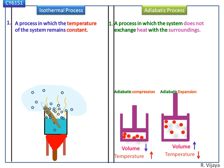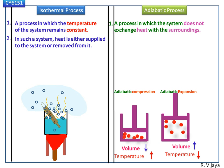In adiabatic process, there is no heat exchange with the surroundings. In isothermal process, heat is either supplied to the system or removed from it. In adiabatic process, no heat leaves or enters the system — here dQ is zero, and in isothermal process dT is zero.